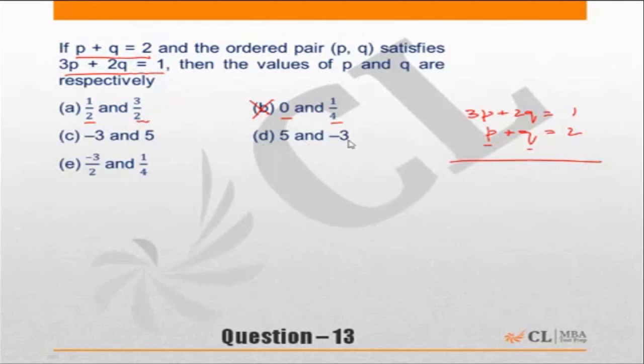5 and minus 3 again adds up to 2. That's fine. This is minus 1.5 and 0.25. Choice E is also incorrect.